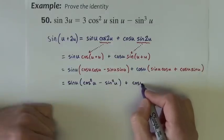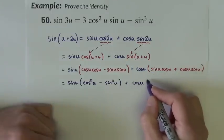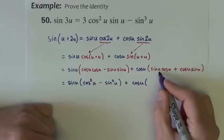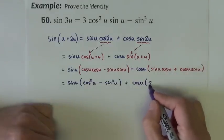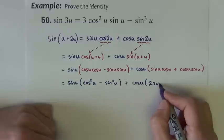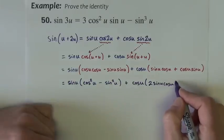this over here is cosine u, and let's see, this is sine cosine, this is also sine cosine, so it's like 2 sine u, cosine u.